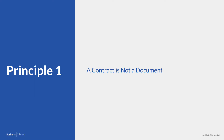Principle 1: A contract is not a document. Certainly, most business contracts are reduced to writing and are therefore a document. A contract, however, covers the entire legal relationship between you and the other party to the transaction. Even simple contracts often consist of more than one document. For example, the contract might contain the main agreement, a related non-disclosure agreement, a schedule, and an amendment. All of these documents are important to understand the entire contractual relationship.